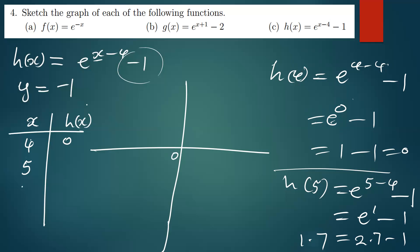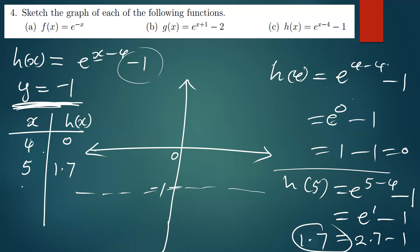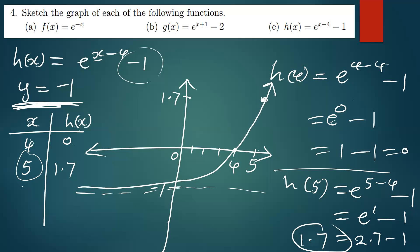Sketching h of x: first we draw the horizontal asymptote at y equals negative one. Then we plot the coordinates — four comma zero, which lands on this point, and five comma 1.7, which is up here. The curve moves like this, and it is not supposed to touch the asymptote. This is our h of x.